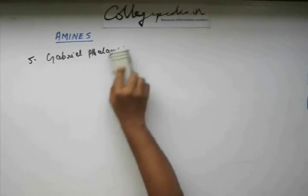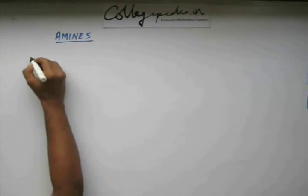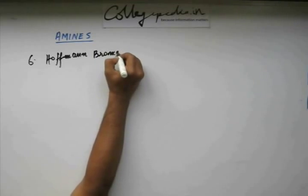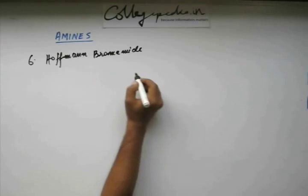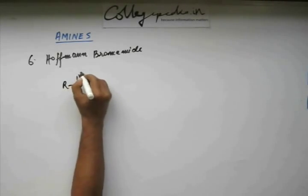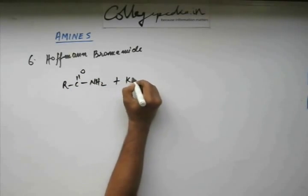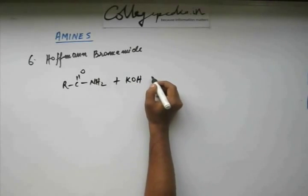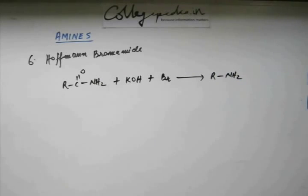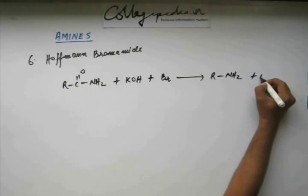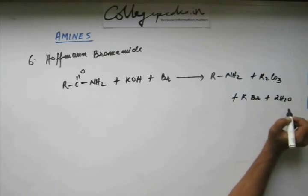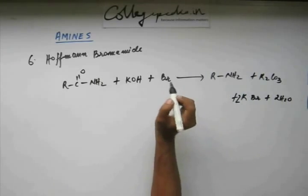Let's move on to a very important reaction called the Hoffmann Bromamide or Hoffmann Degradation Reaction. In this reaction, we start with an amide, add KOH base and bromine (Br₂). When the reaction is complete, we get an amine, and the carbonyl oxygen goes to form potassium carbonate. To balance the reaction, you also get potassium bromide and water molecules.